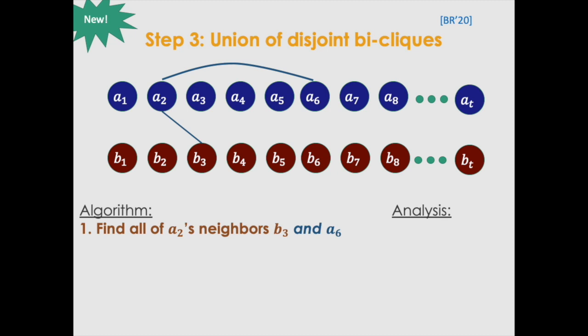and let's say we'll find its neighbors on both sides. This is important. So say b3 on the bottom and a6 on the top.